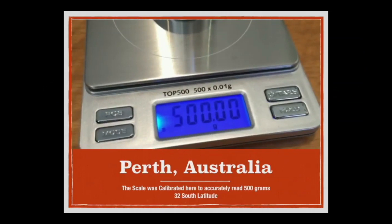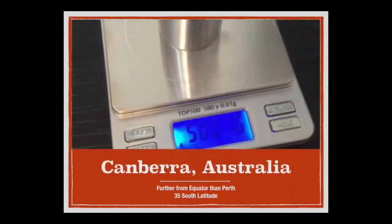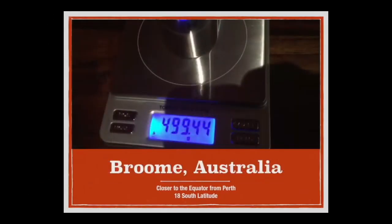Well, at 32 degrees south latitude, in Perth, Australia, this object weighs 500 grams. Now at 35 degrees south latitude, closer to the South Pole, this object weighs 500.16 grams. It weighs more. It is further away from the equator. Going back towards the equator to Broom, Australia at 18 degrees south latitude, 499.44 grams. It weighs less. It is closer to the equator. This seems to confirm our suspicion of a rotating spherical Earth. This is exactly what we would expect from that.